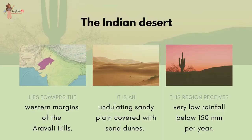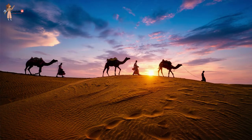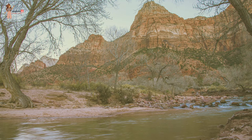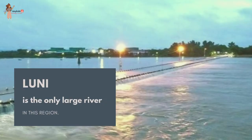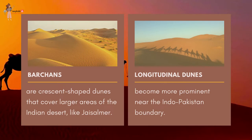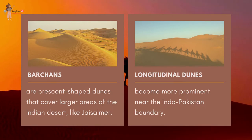The Indian desert lies towards the western margins of the Aravalli hills. It is an undulating sandy plain covered with sand dunes. This region receives very low rainfall — below 150 millimeters per year — and has an arid climate with low vegetation cover. Streams appear during the rainy season but soon disappear into the sand as they do not have enough water to reach the sea. The Luni is the only large river in this region. Barchans, which are crescent-shaped dunes, cover larger areas like Jaisalmer, but longitudinal dunes become more prominent near the Indo-Pakistan boundary.